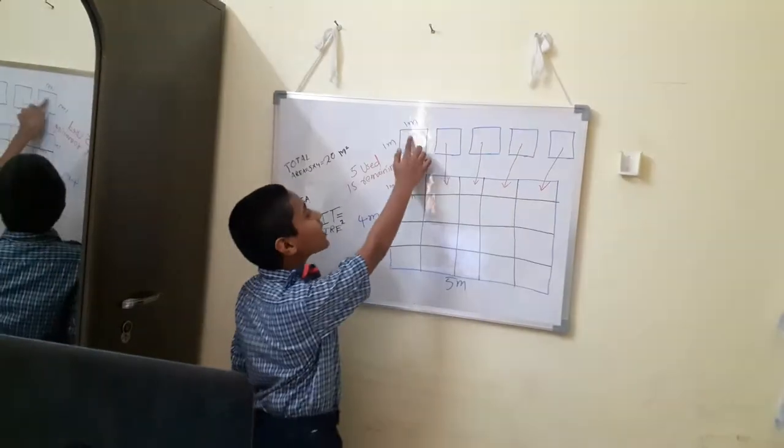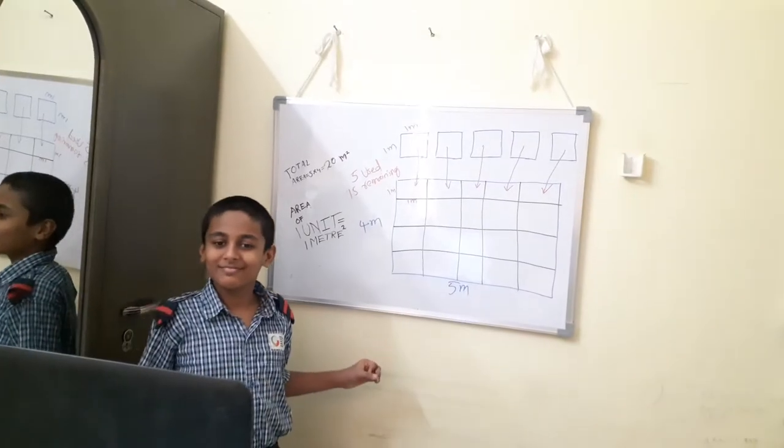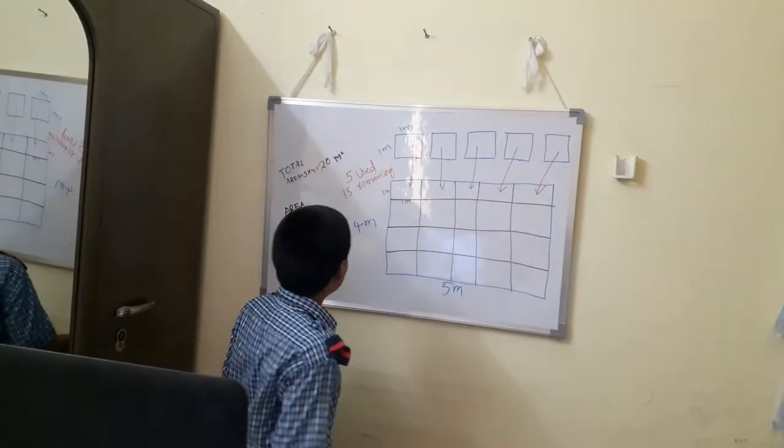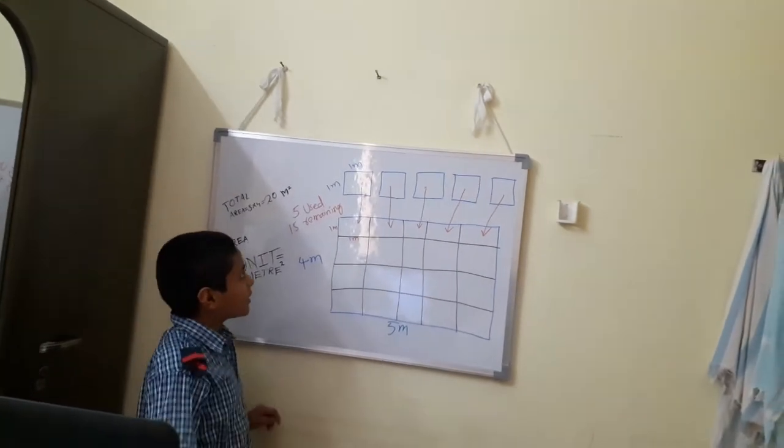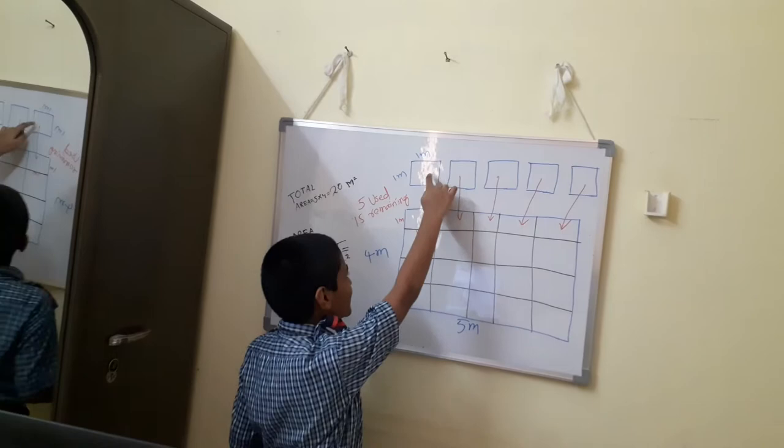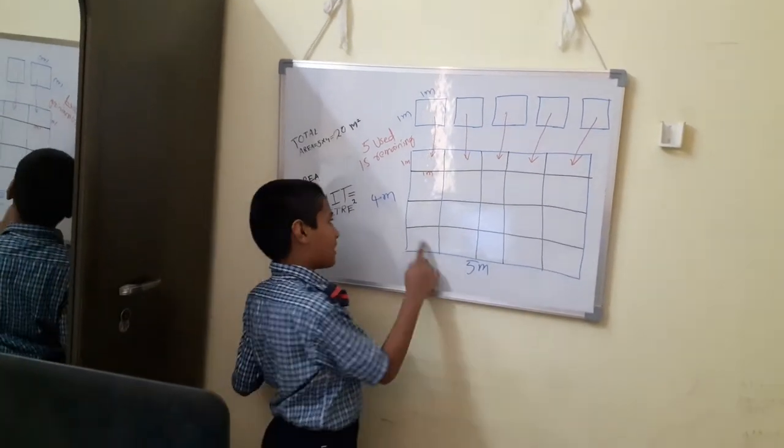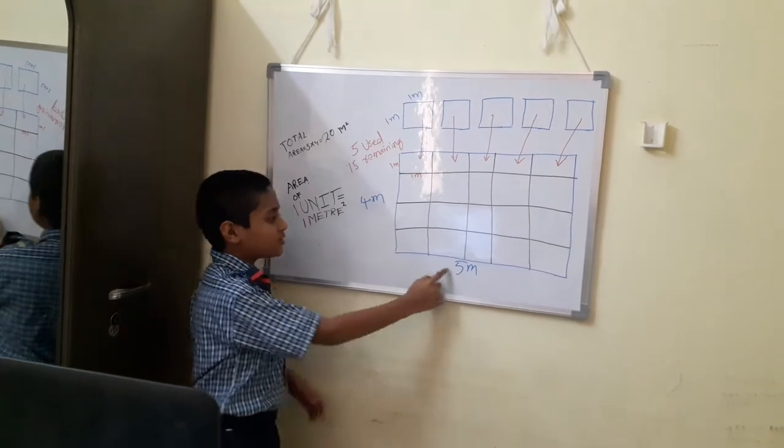Ma'am, these are the five flower beds. Each of them sides are one meter, the square. So we should take, ma'am, this is the piece of land, four meter and five meter. Area is twenty meters.